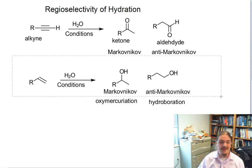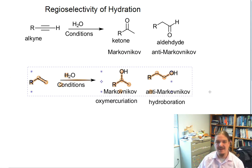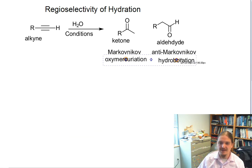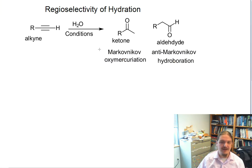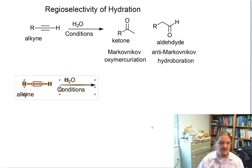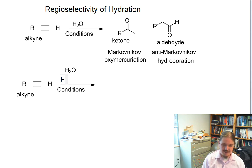In the alkyne world, the same types of reactions generate the same regiochemistry as in the alkene case. We get Markovnikov regiochemistry from oxymercuriation and anti-Markovnikov regiochemistry from hydroboration-oxidation reactions.